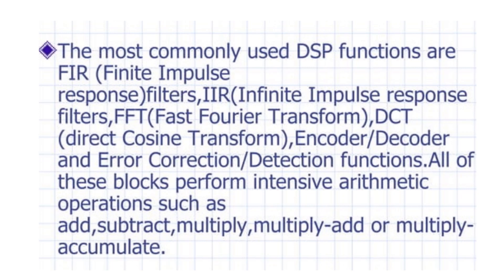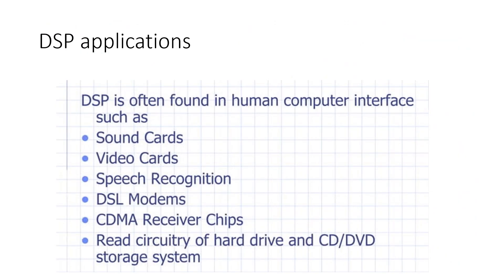Normally, we use DSP functions for FIR, IIR, Fast Fourier Transform, DCT, encoders, decoders, error correction, and all arithmetic operations. Apart from that, DSP applications are also found in human-computer interfaces such as sound cards, video cards, and speech recognition. These applications can be much faster and more reliable when we use FPGAs.